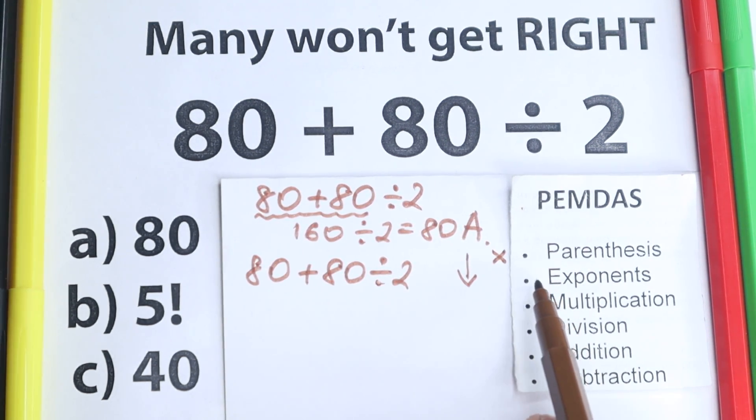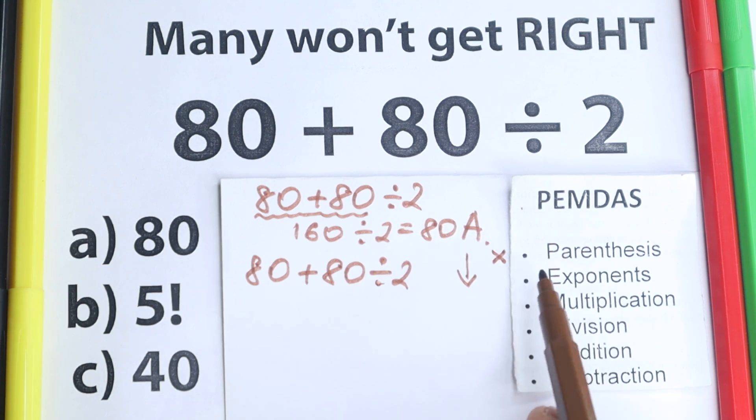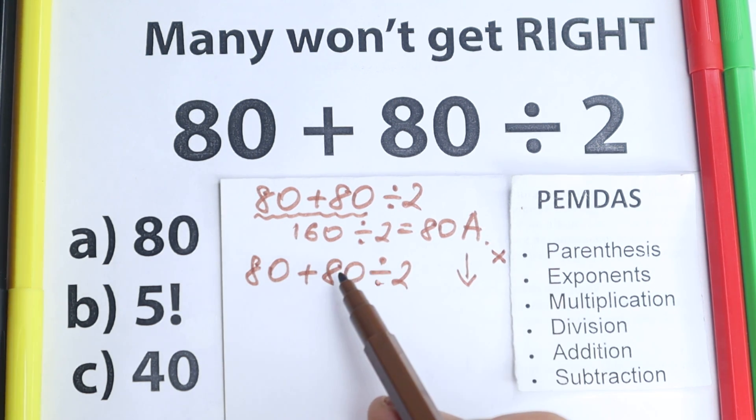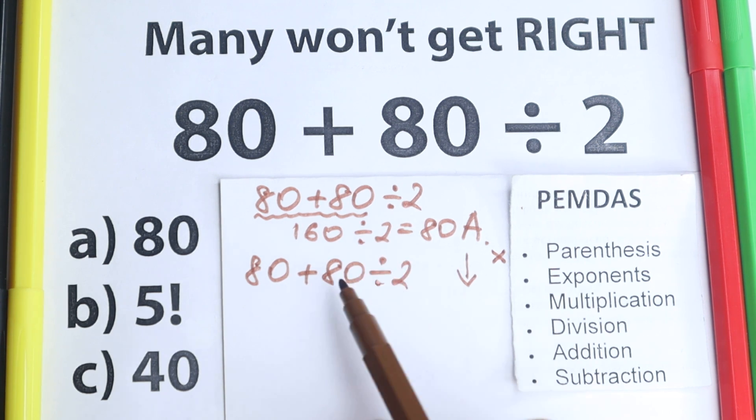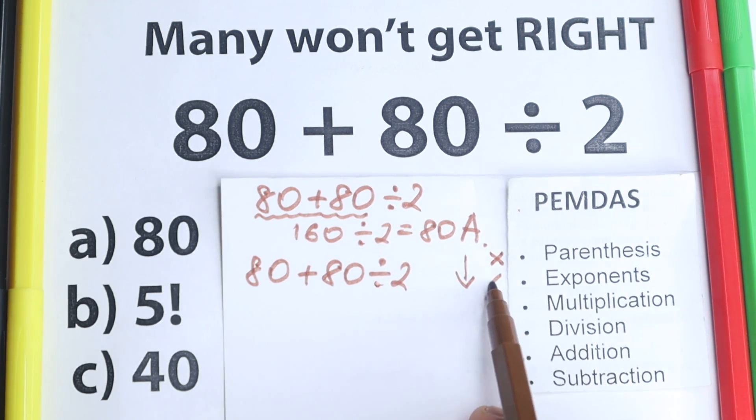Second step, exponents. So are there any exponents right here? No, we don't have any exponents, we don't have any squares, cubes right here. Which is really great because we can go to the next step.